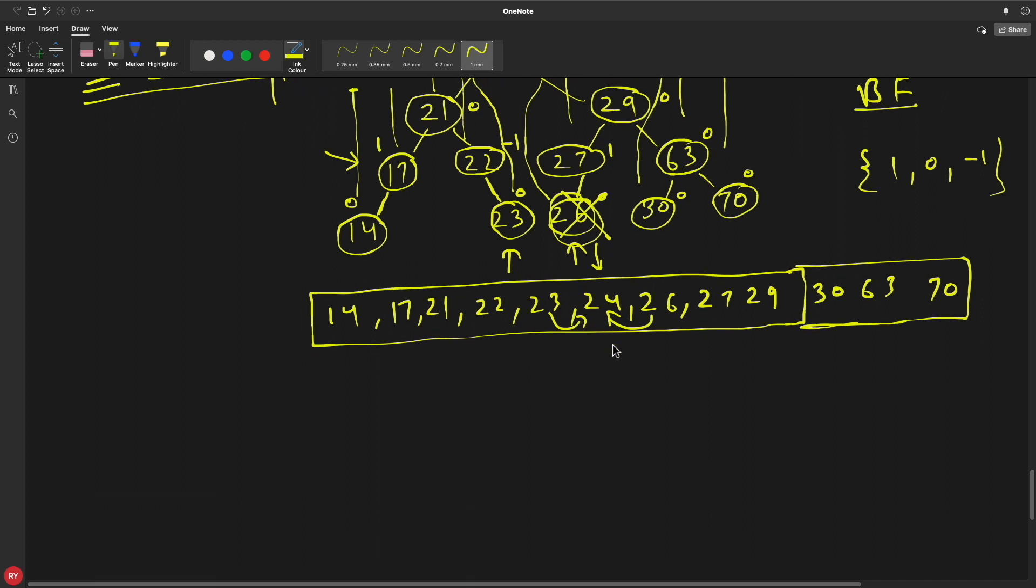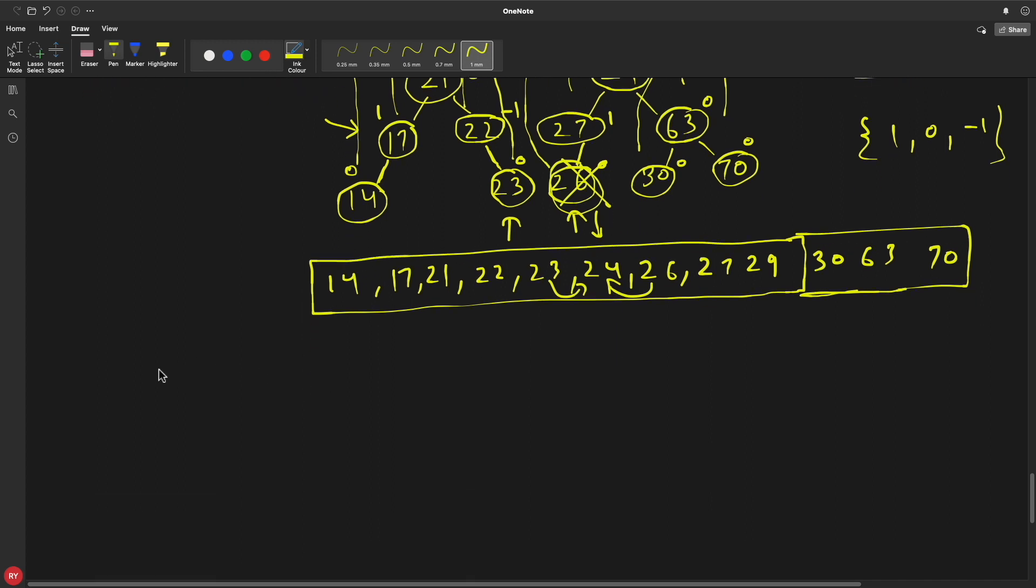And the complexities goes like this: you have insertion time complexity is log n because you always have divided this into two. Yeah, so base two, okay? So log base 2 n. And search is also the same. We have log base 2 n because you will search in a logarithmic fashion and every time you will remove half of your search space.